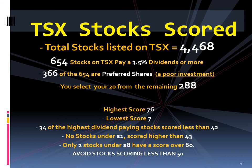The minimum 3.5% dividend selector immediately eliminated 3,814 stocks from consideration. This left 654, which would still take several days to score. Within these 654 are 366 preferred shares. As previously explained, preferred shares can be eliminated from consideration, leaving you with 288 shares for purchase consideration.